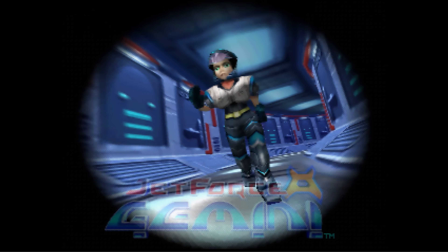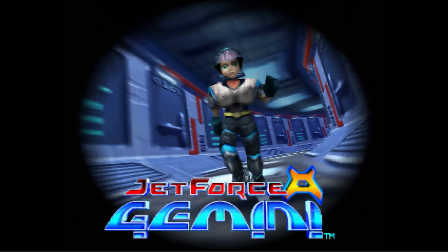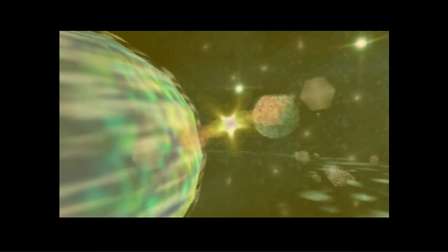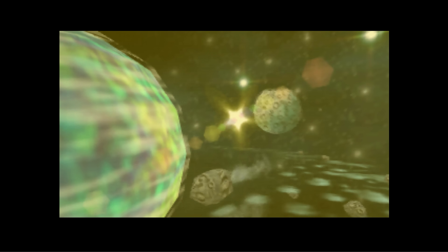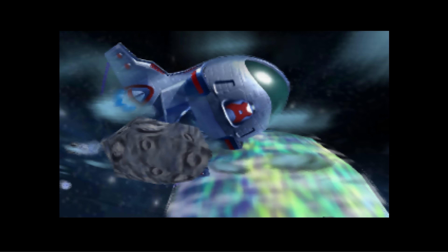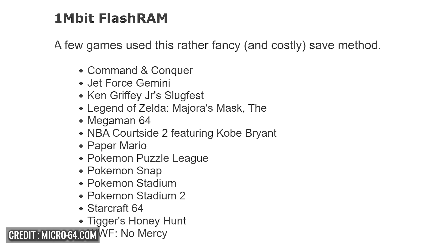Finally, there was even a third method of saving games known as flash saves. This was a 1-megabit, larger non-volatile memory chip used in some games for saving progress. Unlike SRAM, Flash RAM does not lose its data when the power is removed. Flash RAM was used in a handful of titles, including The Legend of Zelda: Majora's Mask, Jet Force Gemini, Pokémon Snap, and the stadium games.